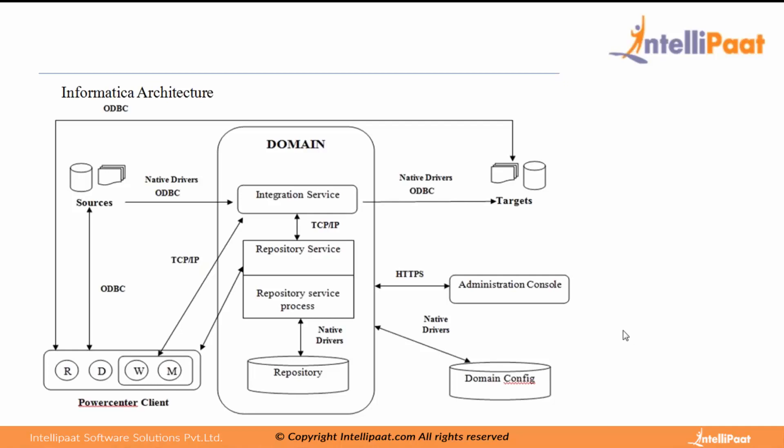In projects you might use a multi-node architecture, and you might also use a grid system. A grid is basically a collection of nodes. There is a difference between multi-node and grid architecture. In a multi-node architecture, nodes are separate entities placed at separate locations and communicate with each other through services.